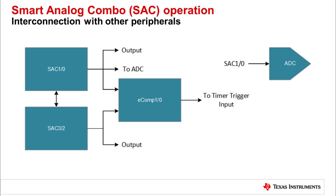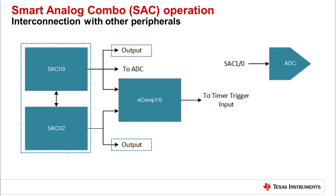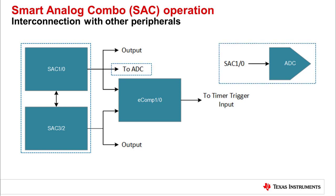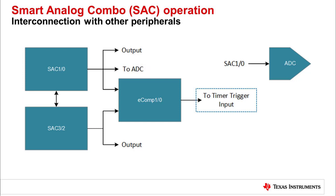Now that we have gone into each of the integrated analog peripherals in the MCU, let's see how we can configure them together. We can bypass the comparator and the ADC and route the smart analog combo directly to our output pins. We can also feed smart analog combo outputs into the comparator, or cascade smart analog combo blocks into each other for multi-stage analog signal conditioning. We can feed smart analog combo output into an ADC with no hardware changes needed. We can also configure the eComp as an input to a timer. The integrated analog signal chain is flexible, easy to configure, and can support both simple and complex analog solutions.